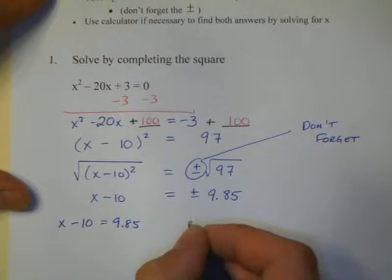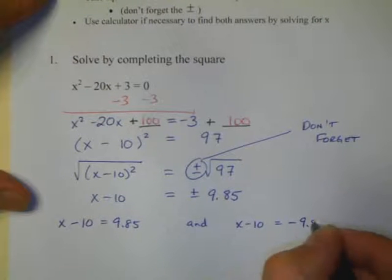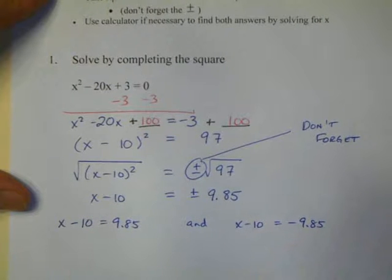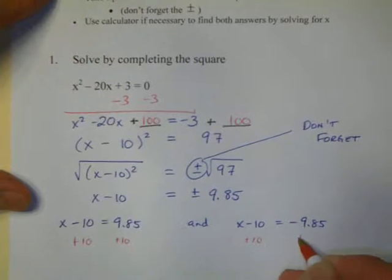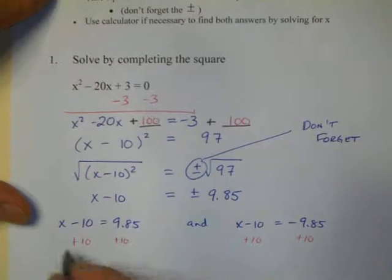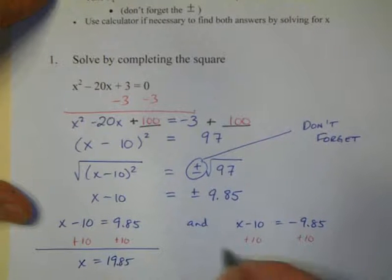Now we're going to split our problem into two parts. x minus 10 equals positive 9.85, and x minus 10 equals negative 9.85. Solving this, we're merely going to add 10 to both problems on both sides.